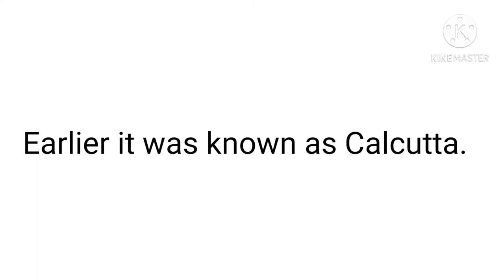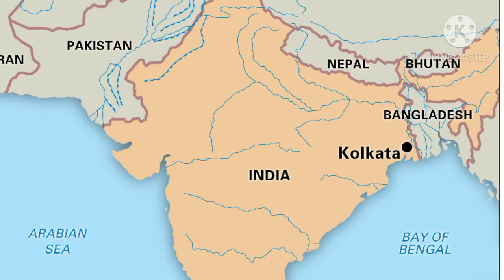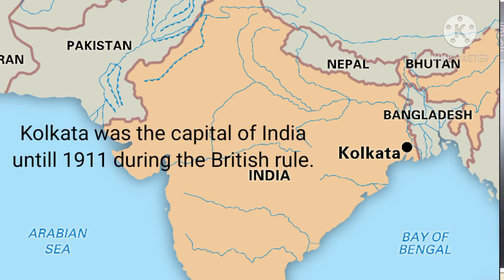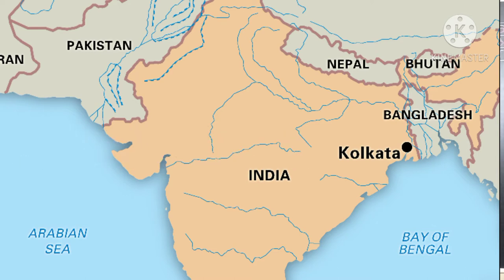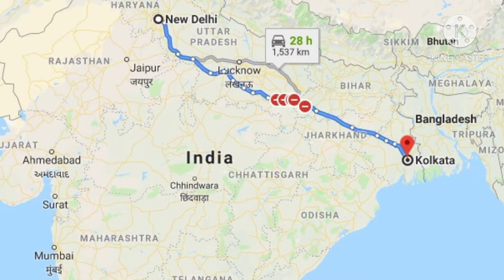Do you know, earlier Kolkata was known as Calcutta. Calcutta is the old name of Kolkata. Kolkata was the capital of India until 1911 during the British rule. After that, the capital shifted from Kolkata to New Delhi. We discussed in the earlier video that New Delhi is the capital of India.